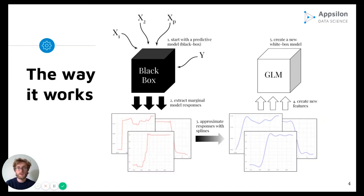As a result of this idea, we worked out the following approach. We start with the black box model and extract its marginal model responses. The model responses are usually irregular functions, so we approximate them with splines, and such splines are used to transform the original data variables to create a GLM model.